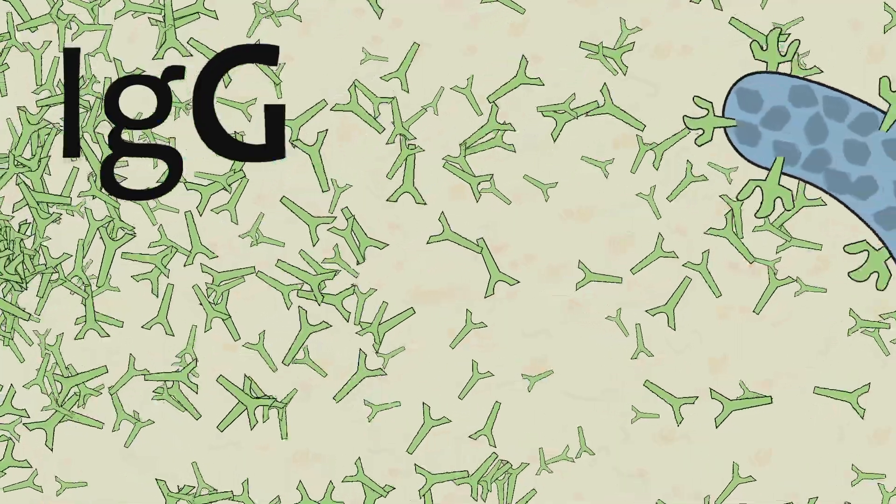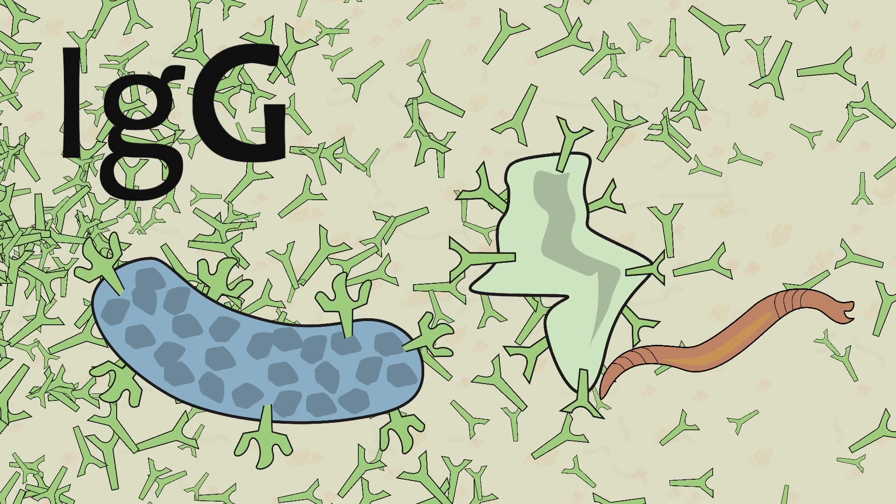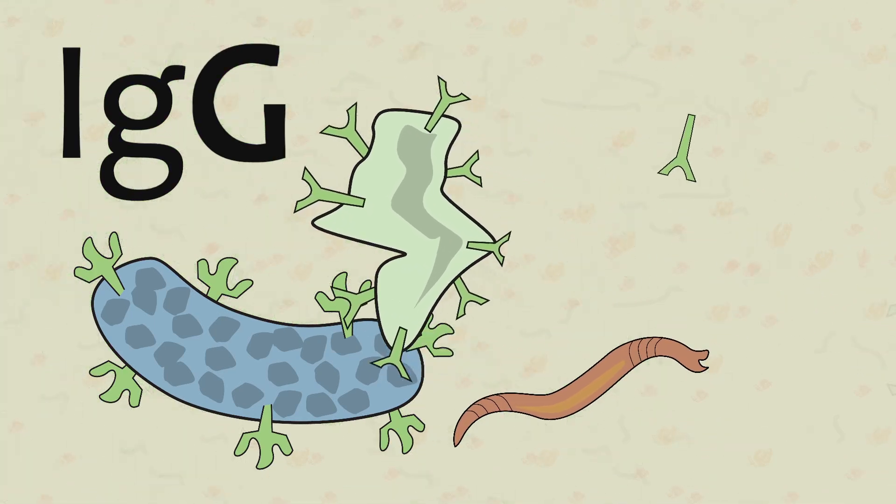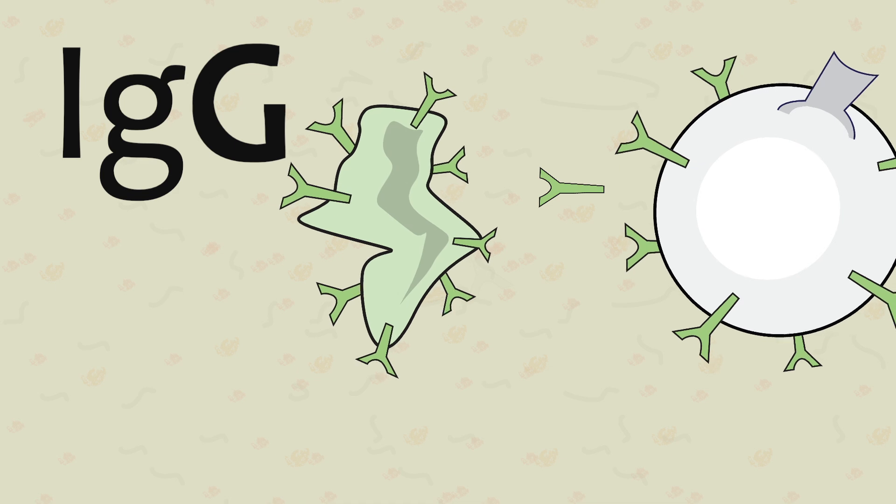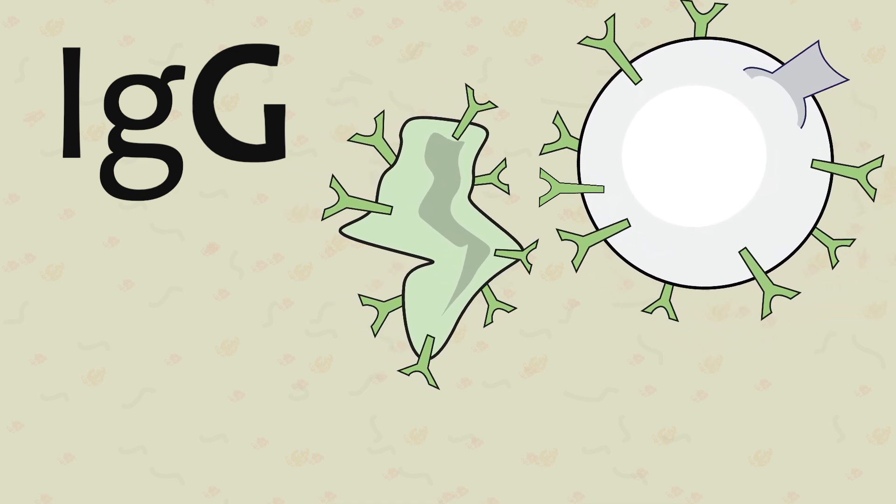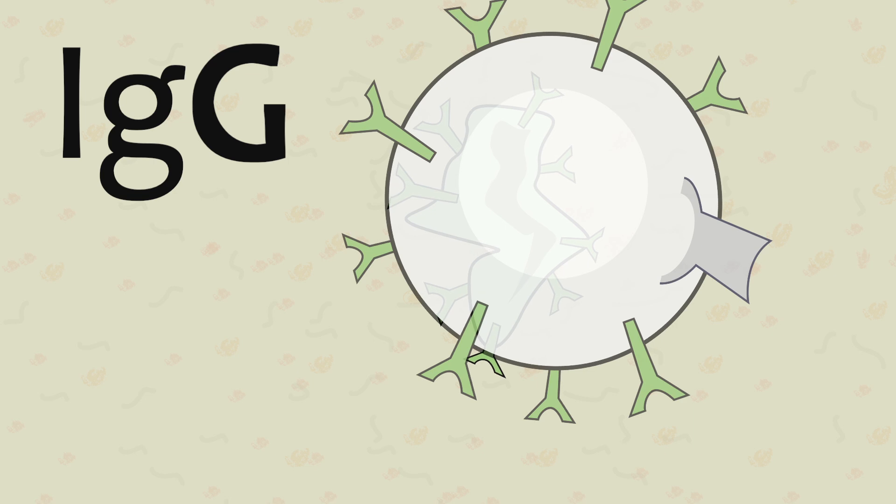IgG's target pathogenic organisms such as bacteria, viruses, and parasitic worms. They attach to the antigens on one end, while the opposite end binds with a phagocyte white cell, including macrophages, neutrophils, and natural killer cells, which absorb and destroy the antigen.